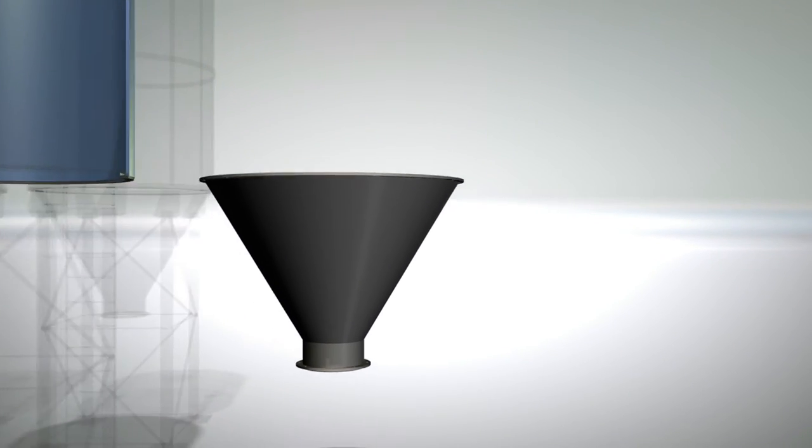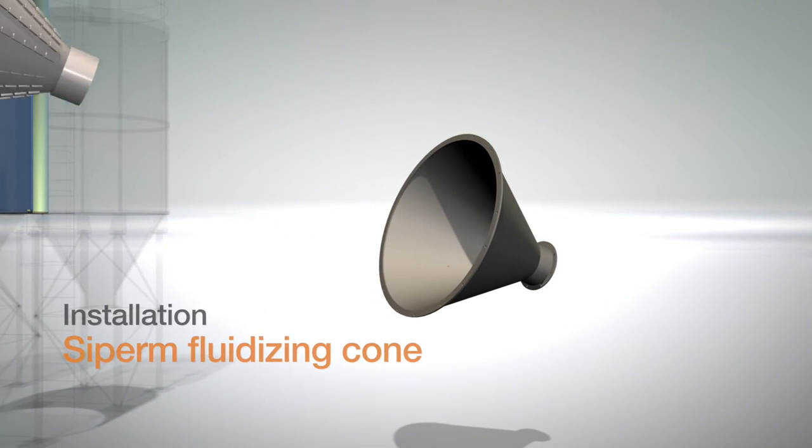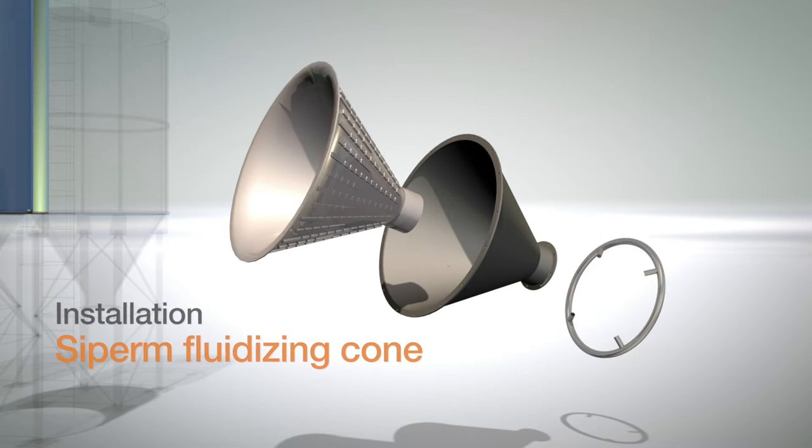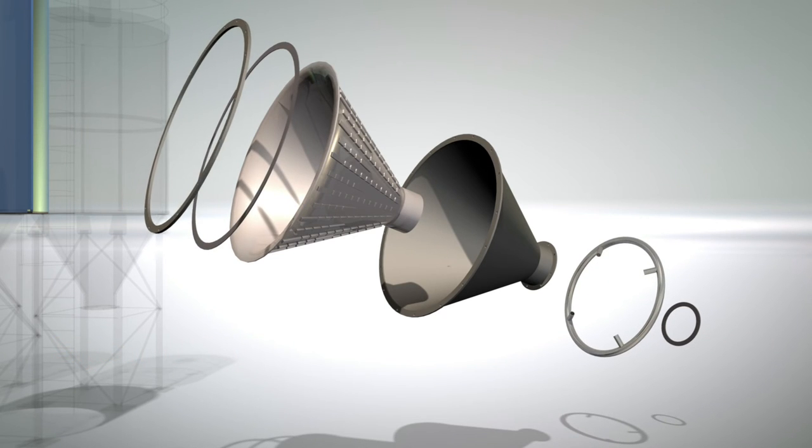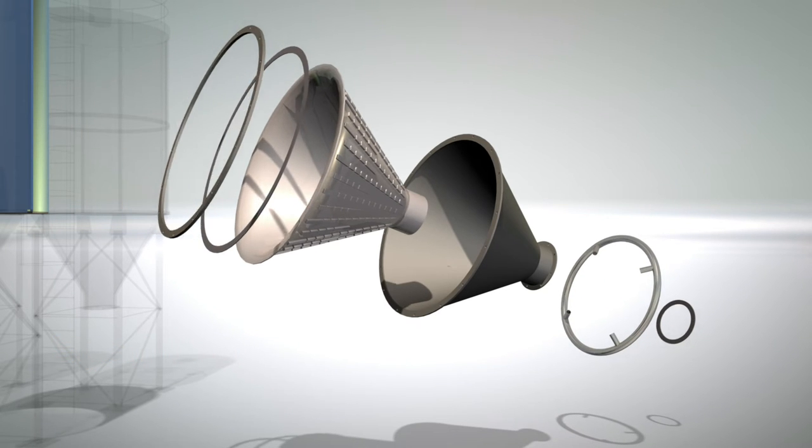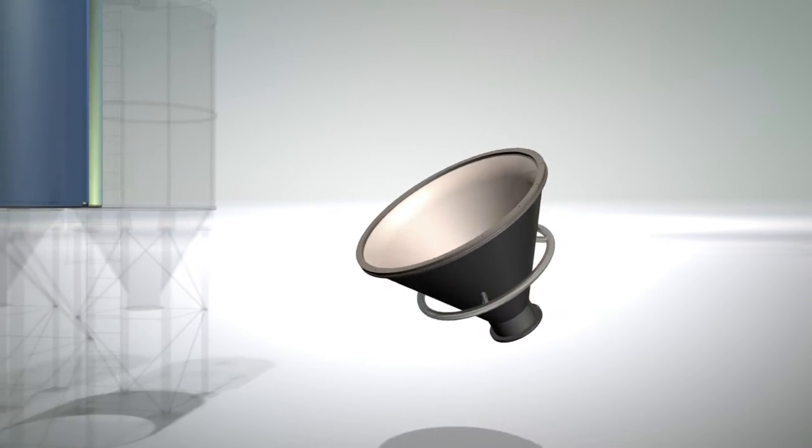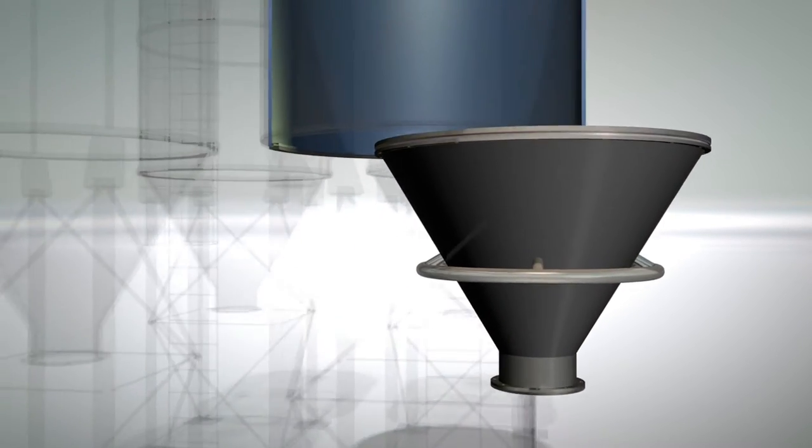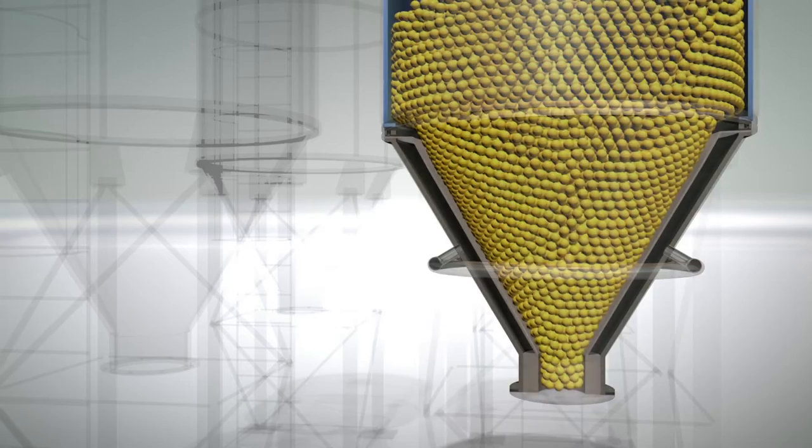If difficulties like these are recognized, the installation of a fluidization bottom made of ZPEM may help to solve the problems. A porosity that is specifically adapted to the bulk material and the precise control of the air supply bring the bulk material to flow again.